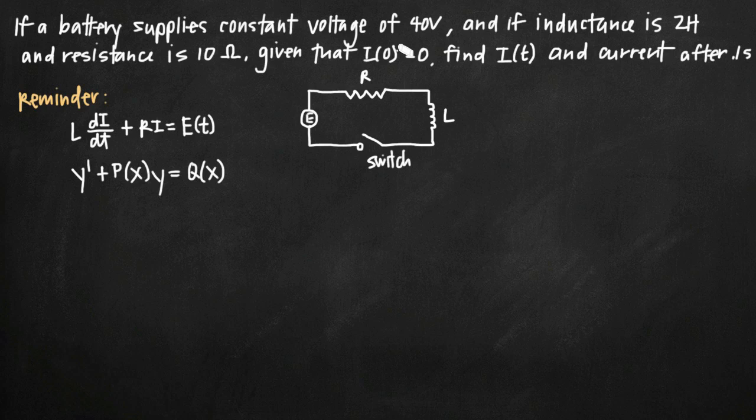We've been told that in this circuit, a battery is supplying a constant voltage of 40 volts, that the inductance is 2 henrys, the resistance is 10 ohms, and we've been given the initial condition I(0) = 0. Keep in mind that I is an equation for the current.